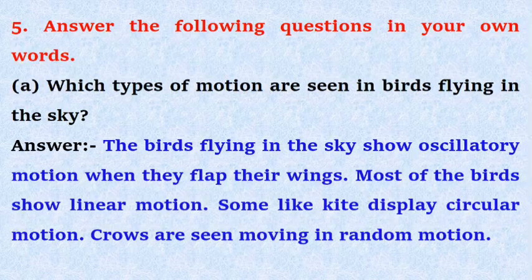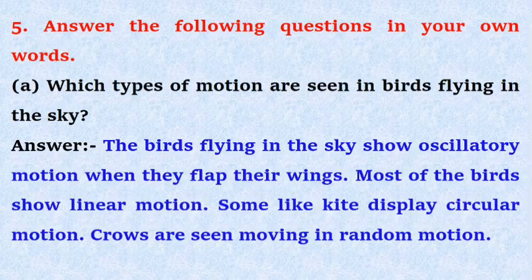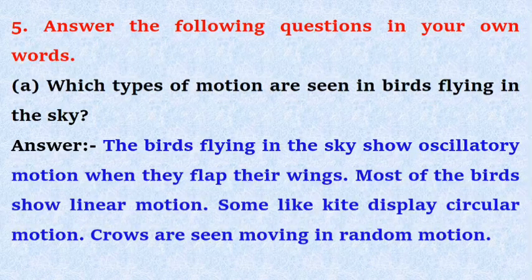Answer: The birds flying in the sky show oscillatory motion when they flap their wings. Most of the birds show linear motion. Some like kite display circular motion. Crows are seen moving in random motion.